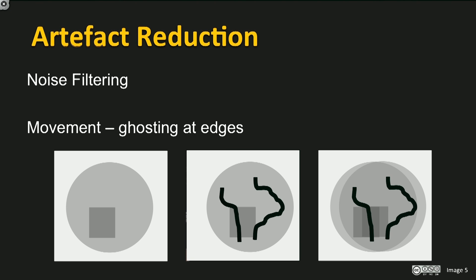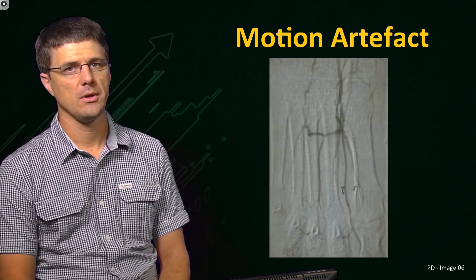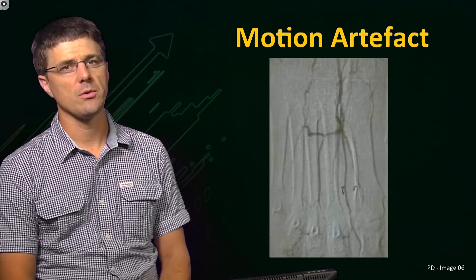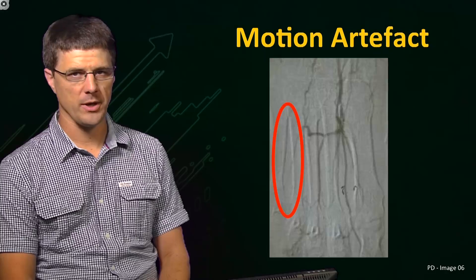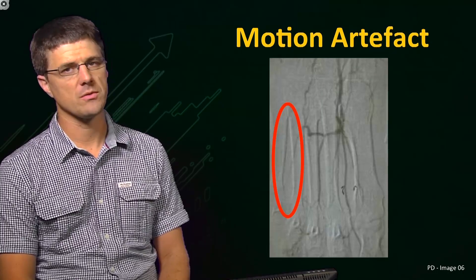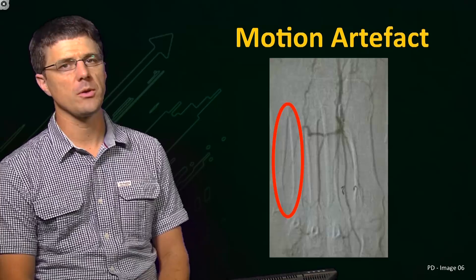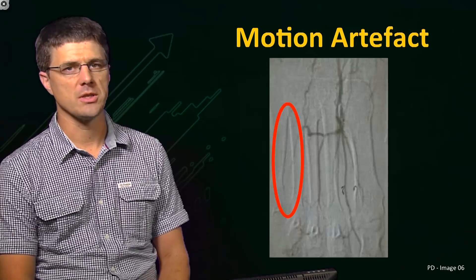A common problem in DSA is when a patient moves between the initial mask image and the following opacification image. This will result in the mask and opacification images being out of alignment. When this happens, a halo-type artefact will be seen on the resulting subtraction images, due to misregistration of the background structures. We will now see this effect in a real example. Here we can see the halo effect in the upper bones of the hand. There are a few methods to correct this artefact, including automated image registration or pixel shifting. However, a more pragmatic approach is to simply reacquire a new mask image in the new orientation.